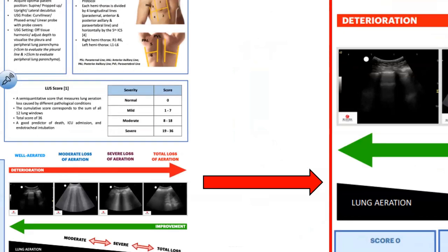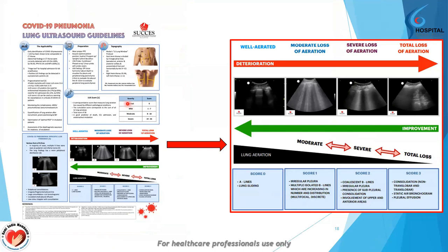The lung ultrasound score is a semi-quantitative score that measures aeration loss caused by different pathological conditions. The cumulative score is the sum of all 12 lung windows, giving a total possible score of 36. It is a good predictor of death, ICU admission, and endotracheal intubation. Severity levels: normal is score 0, mild is 1-7, moderate is 8-18, and severe is 19-36. The higher the score, the higher the rate of death, ICU admission, and endotracheal intubation.